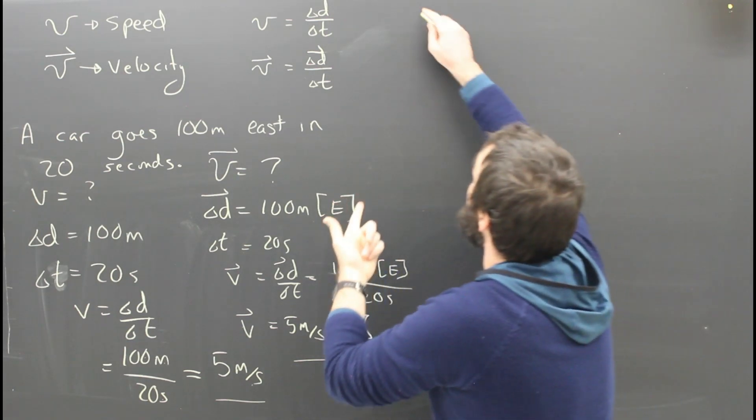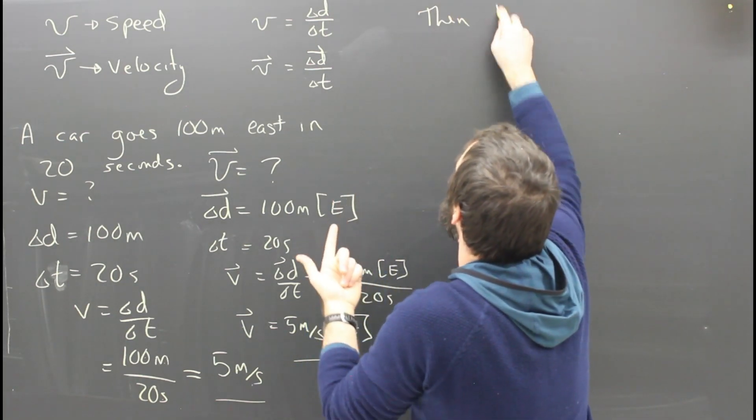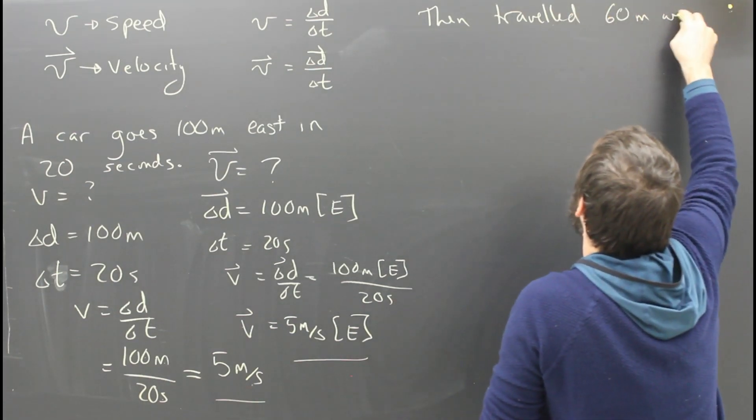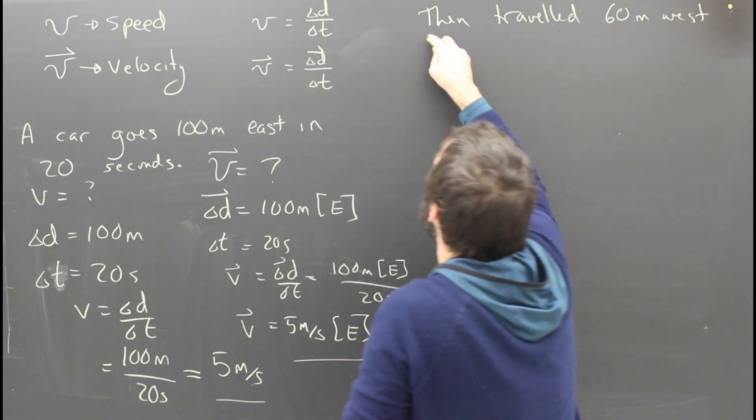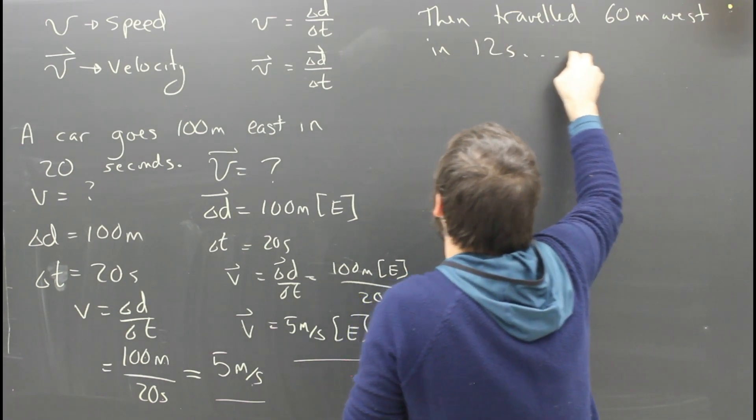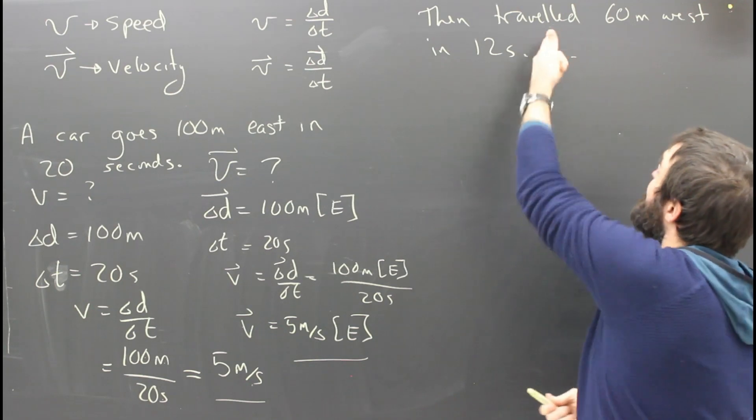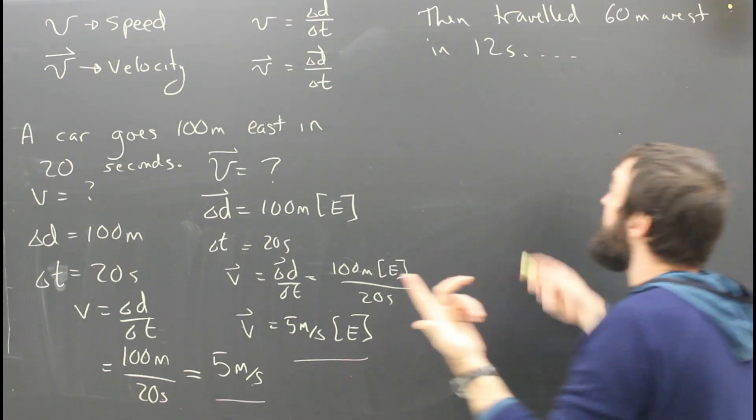Let's say the same car then traveled 60 meters west in 12 seconds. Let's say the same car then turned and traveled west, and it went 60 meters in the next 12 seconds. Then, what would the speed be?